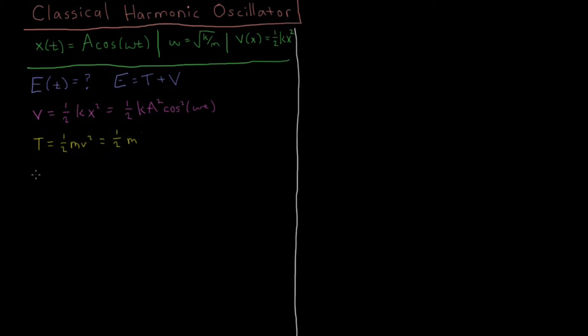we know that we can calculate velocity from the derivative of x with respect to time. And so if we take the time derivative of the function A cos(ωt),